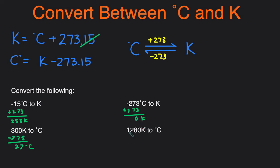And then lastly 1,280 degrees Kelvin to degrees Celsius. Kelvin to degrees Celsius just subtract 273 and we'll get 1,007 degrees Celsius.